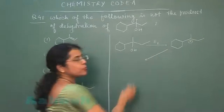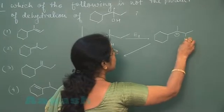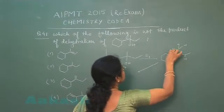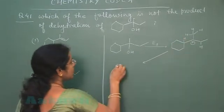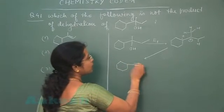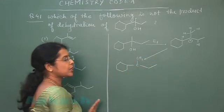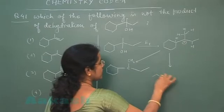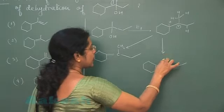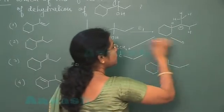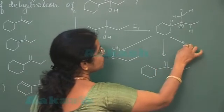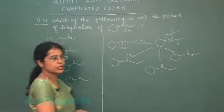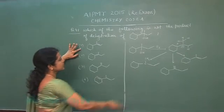The next step is the loss of a beta hydrogen atom. Beta hydrogen atoms are present at three different positions on the carbocation. If the beta hydrogen is lost from the first position, a carbon-carbon double bond forms there. If lost from the second position, a double bond forms at that place. If lost from the third position, a double bond forms at that position — giving three possible alkene products.